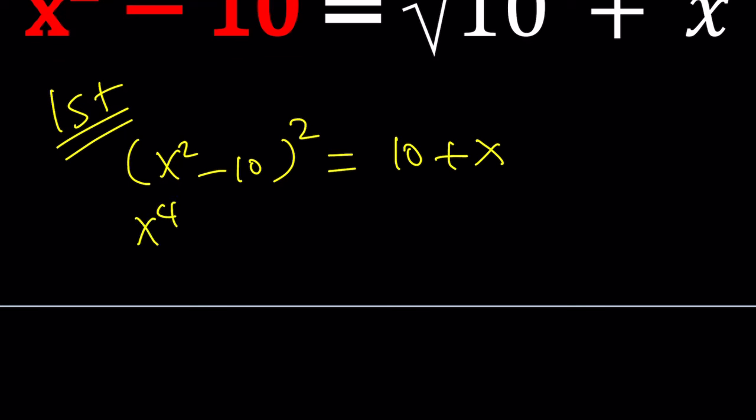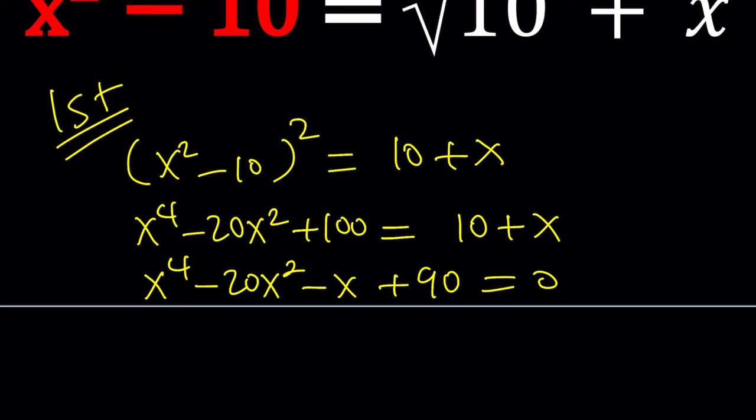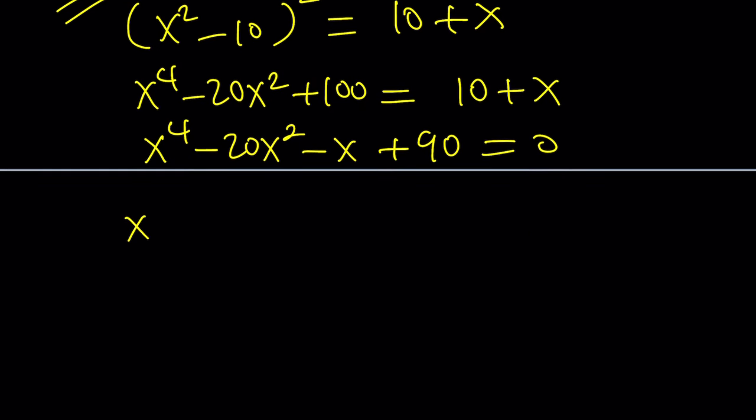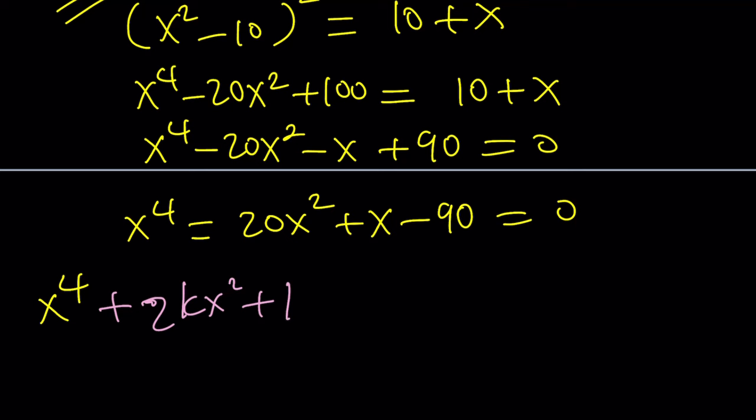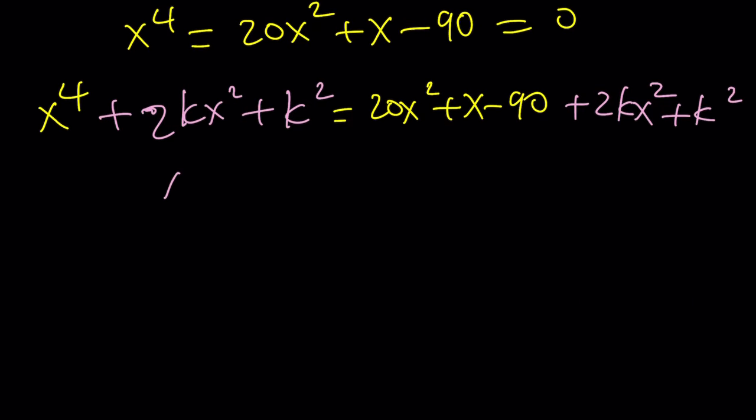We'll square both sides. This is a Kortec equation. We're going to add 2k x squared plus k squared to both sides. And the left hand side will be a perfect square.